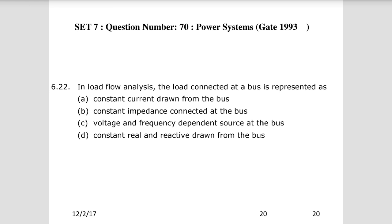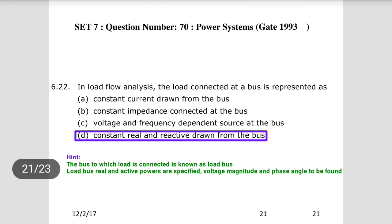Question 10: In a load flow analysis, the load connected at the bus is represented by constant real and reactive power. The bus to which a load is connected is known as a load bus, where real and active powers are specified, and voltage magnitude and phase angle are to be found. In load flow analysis, two values are given and the other two are found using the load flow equations.